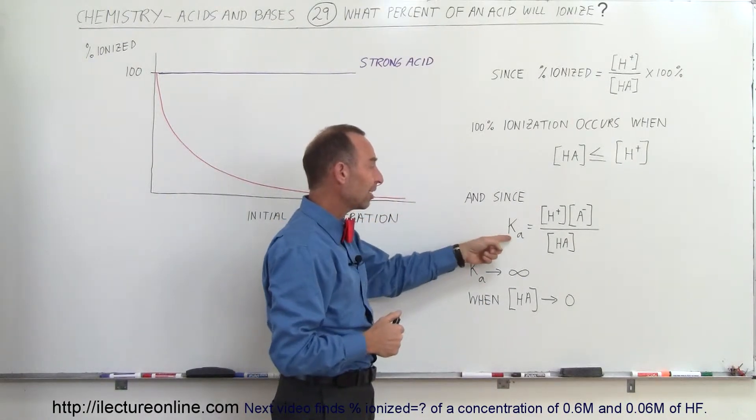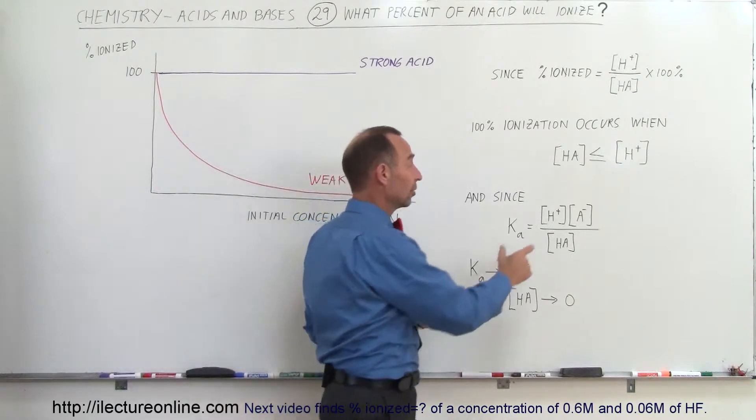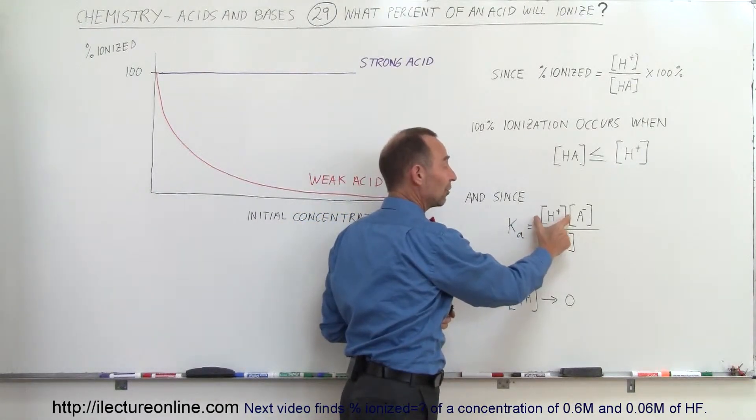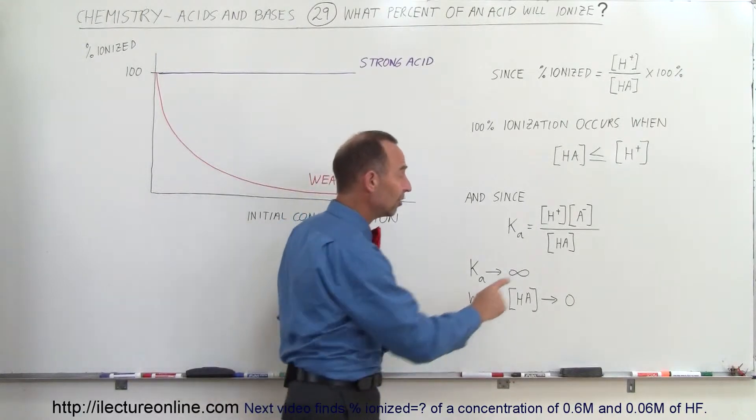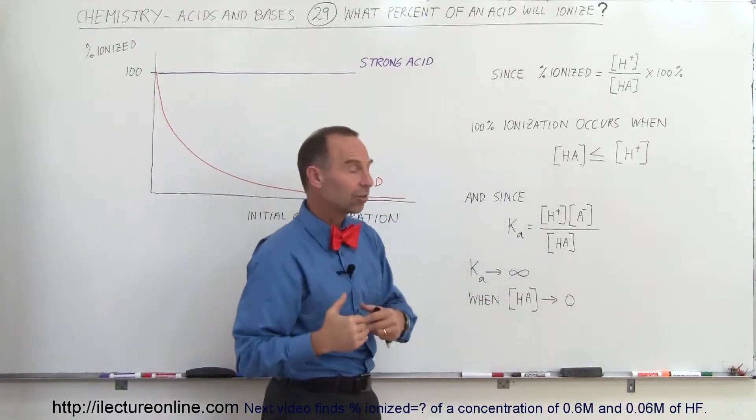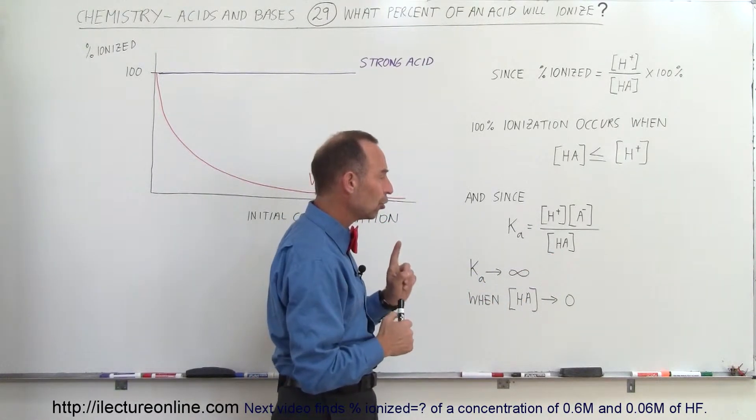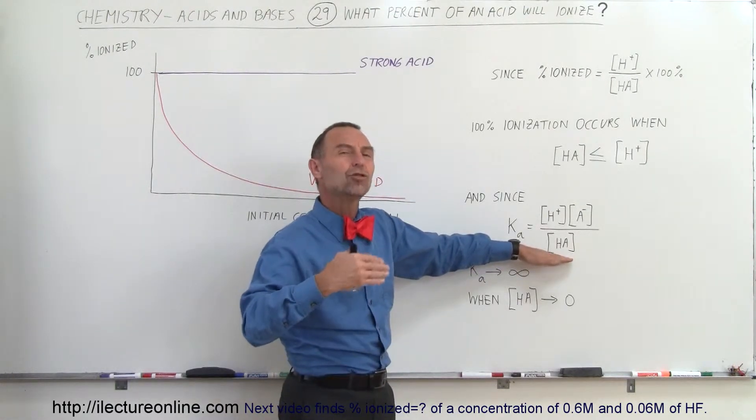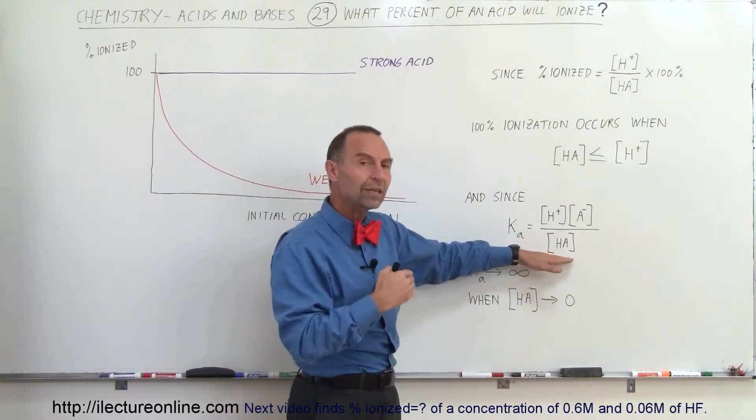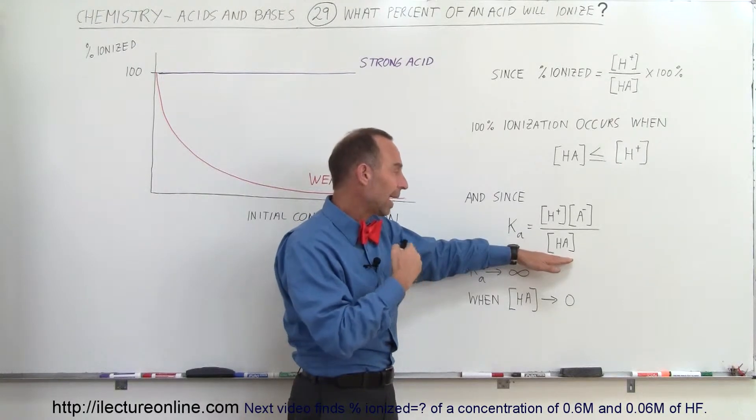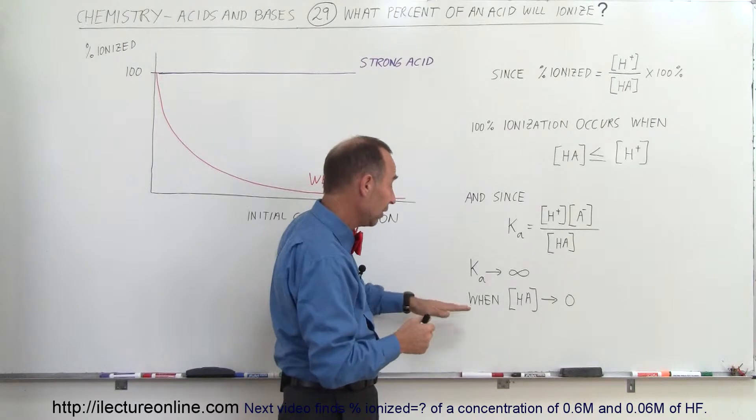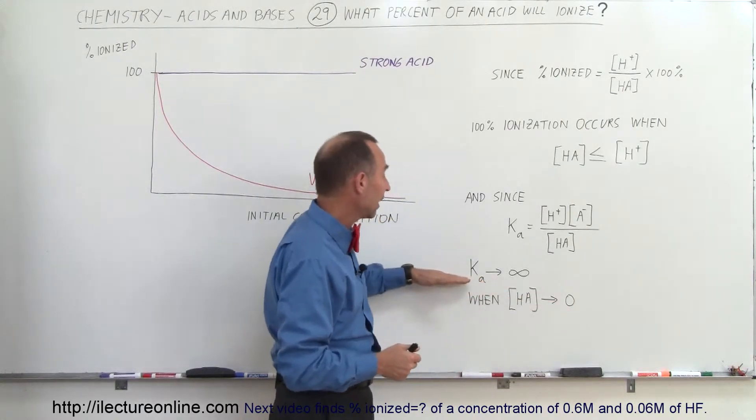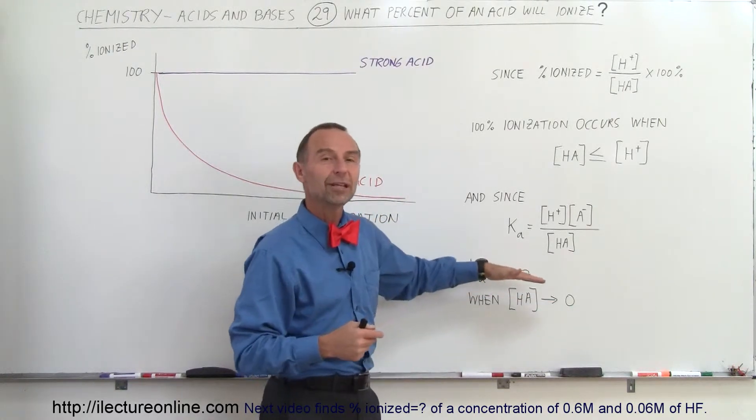And the definition of the ionization constant is the product of the concentration of the hydrogen ion times the concentration of the conjugate base divided by the final concentration of the acid. Now notice that if virtually all of the acid is used up, if almost all of the acid ionizes so that the concentration of the acid at the end is virtually zero, as it goes to zero, the ionization constant goes to infinity.